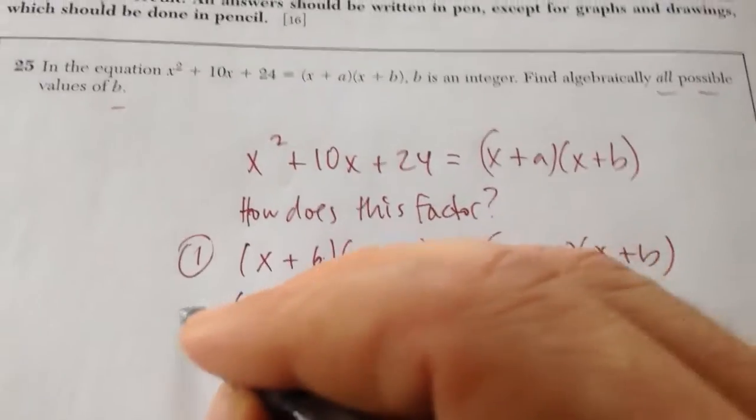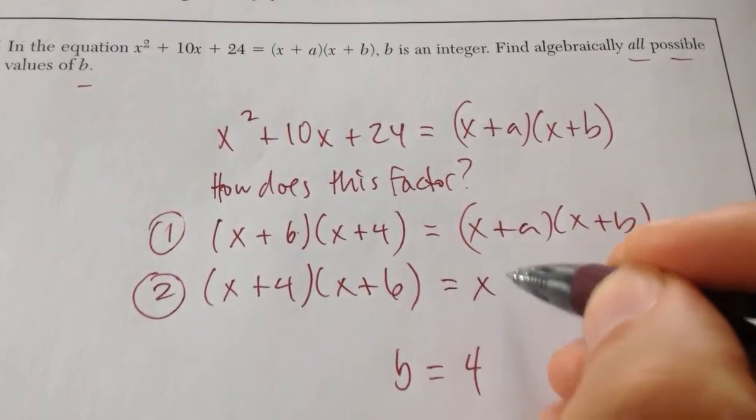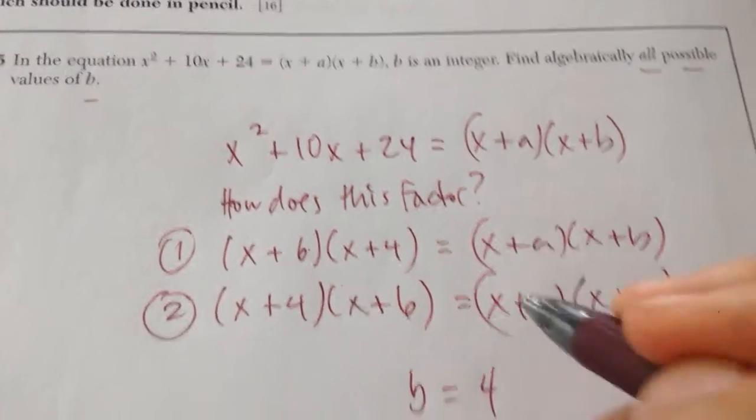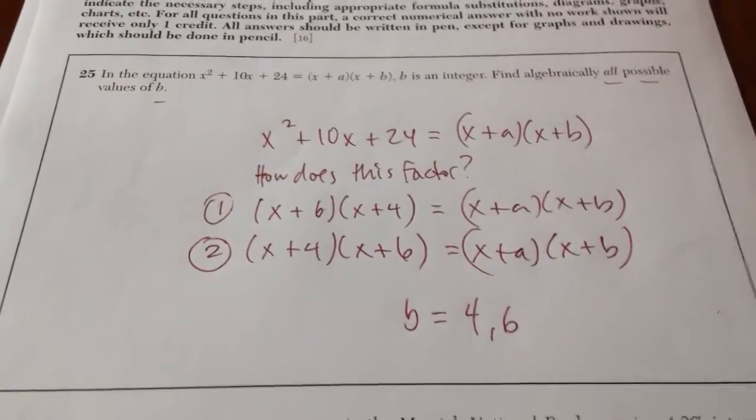So b could be 4. And then in the second equation, because of the commutative property, b could also be 6. So essentially, they're asking you, what are the zeros of this in a very funky way?